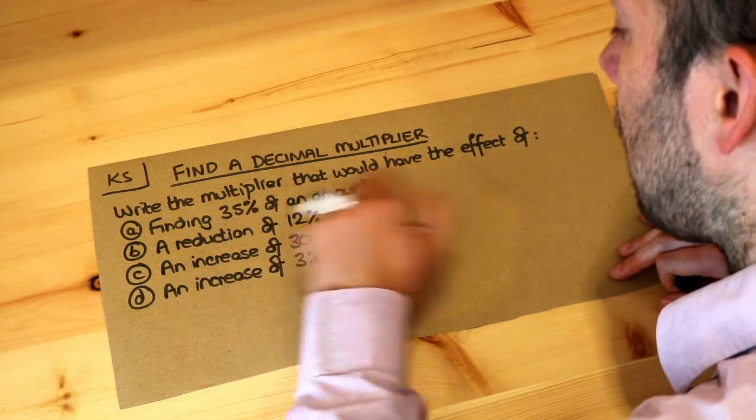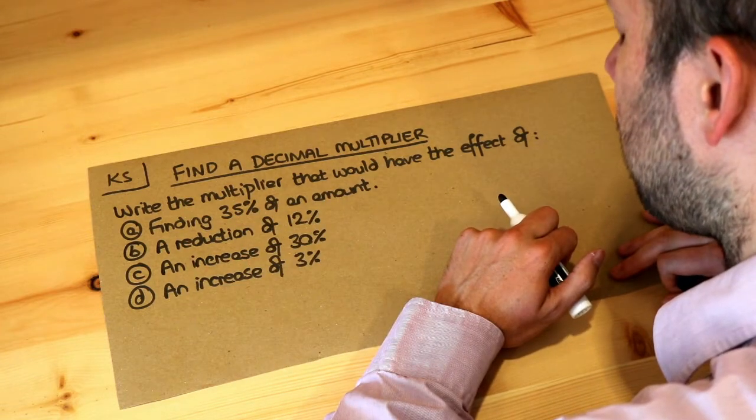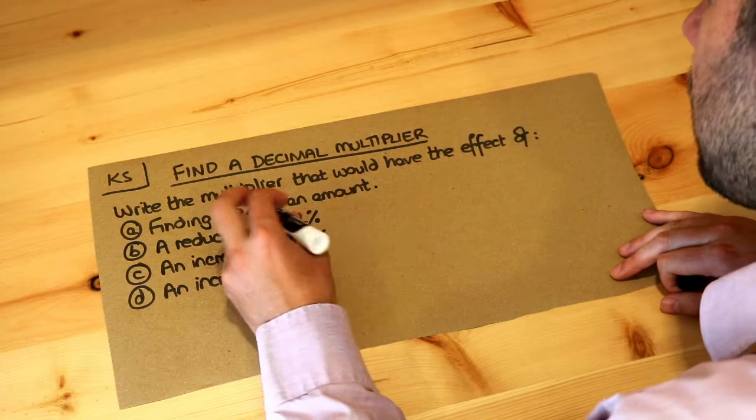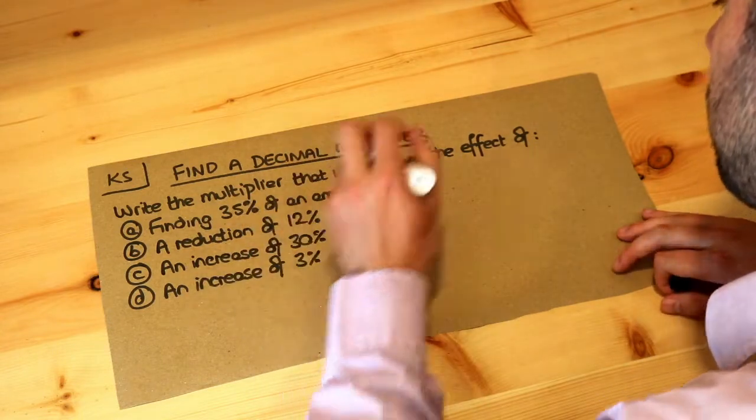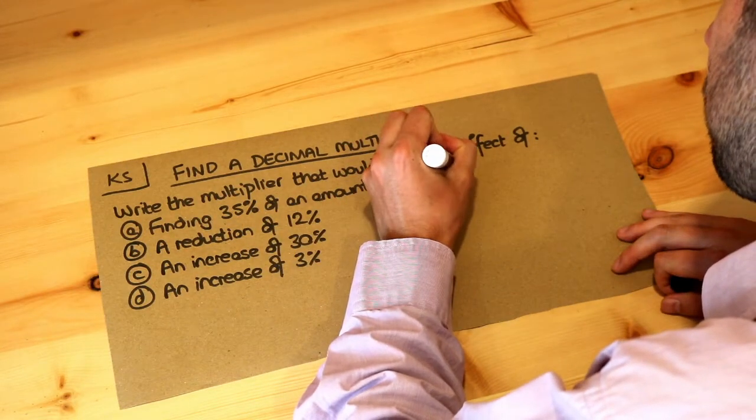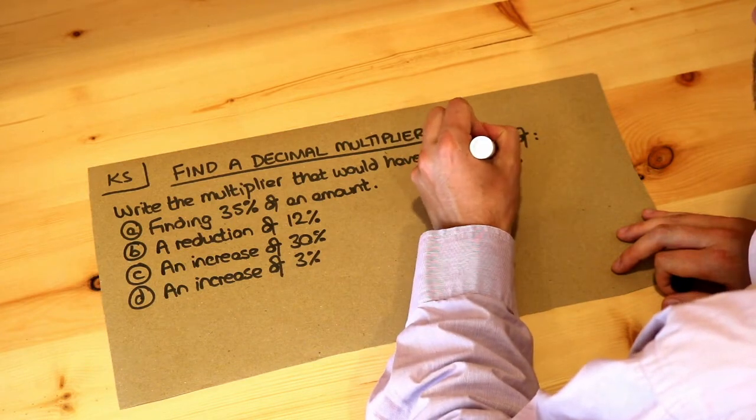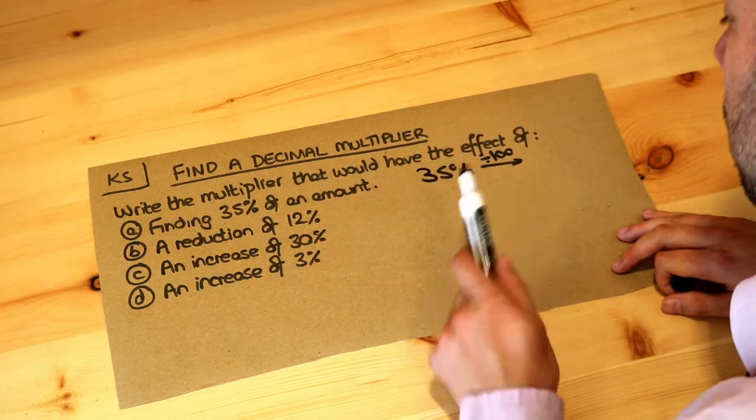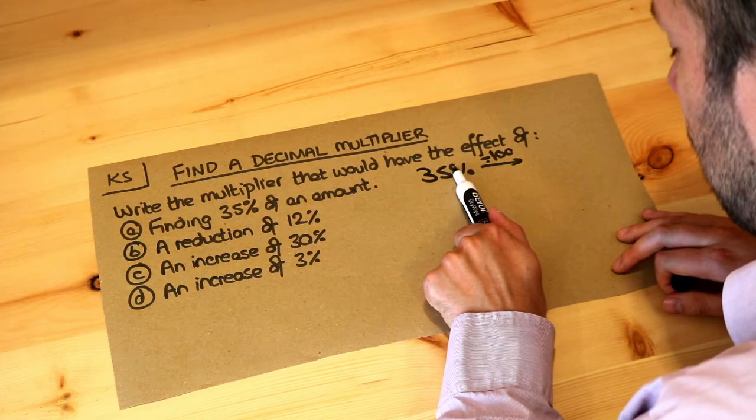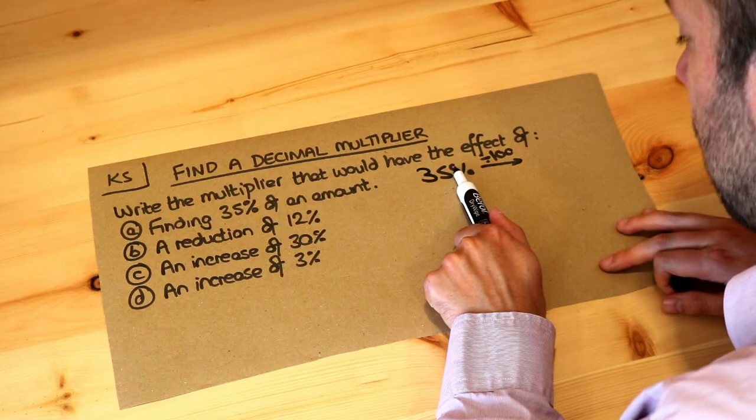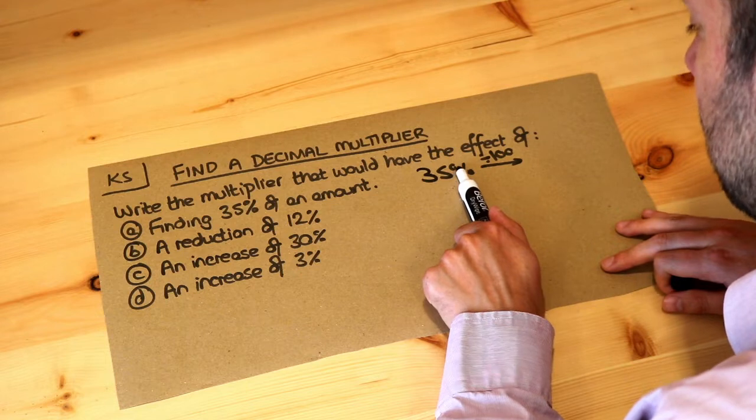So let's go through these. If you want to find 35% of an amount, well if it's a percentage of amount you want to find, you just convert the percentage into a decimal. Now we saw previously to convert a percentage into a decimal we just divide it by 100. So the decimal point is currently at the end of the 5 here, and if we divide by 100 it moves the decimal point two places to the left.